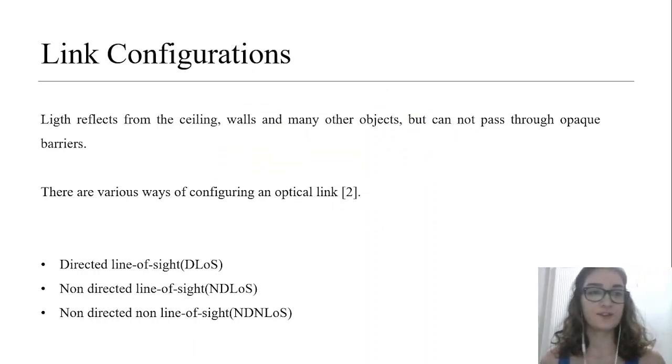The efficiency of the optical wireless channel can vary greatly depending on the optical wireless link configuration. In the indoor environment, lights will reflect from the ceiling, walls, and many other objects in the typical room or enclosure, but will not pass through opaque barriers. In the outdoor environment, lights will be scattered and absorbed by atmospheric conditions. There are various ways of configuring an optical link.